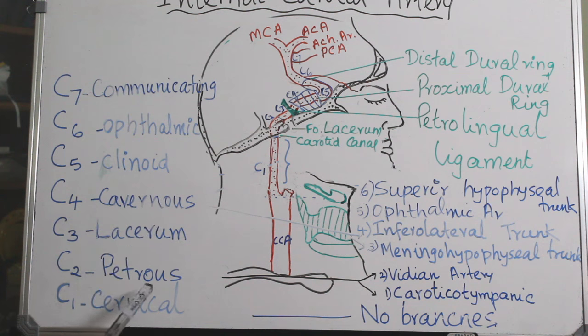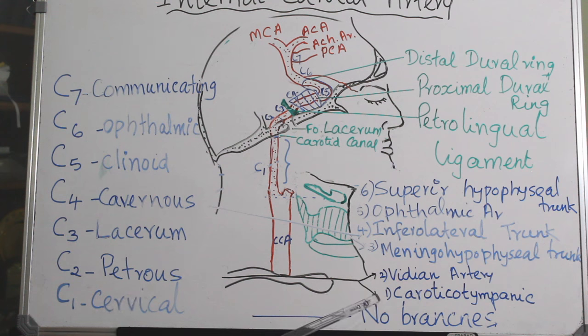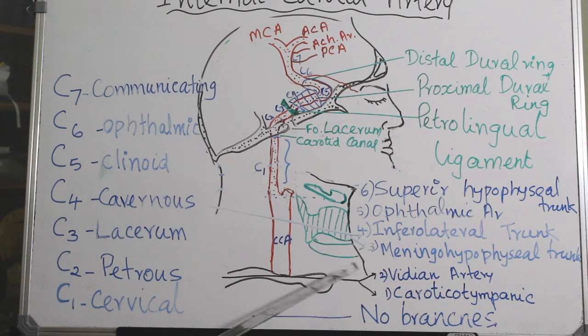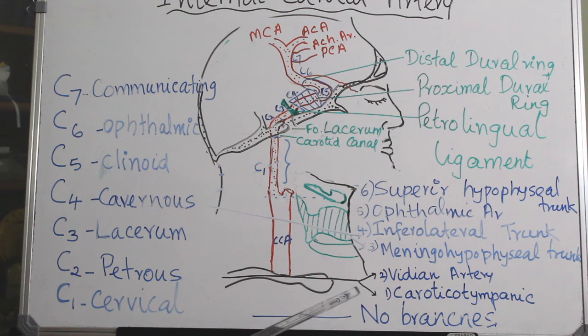The branches of the petrous segment include the caroticotympanic artery and the vidian artery. So from C1 there are no branches, and from C2 arise the caroticotympanic and the vidian artery.